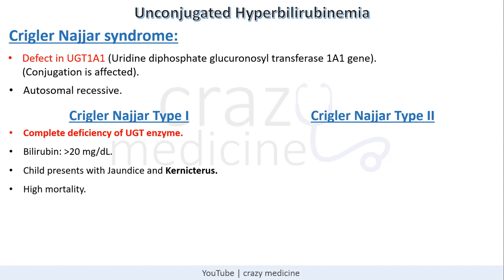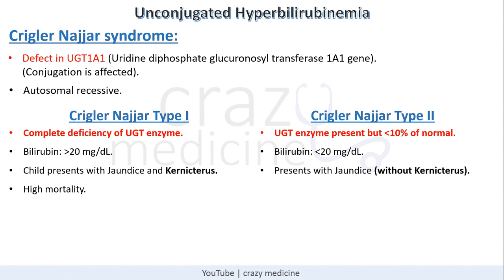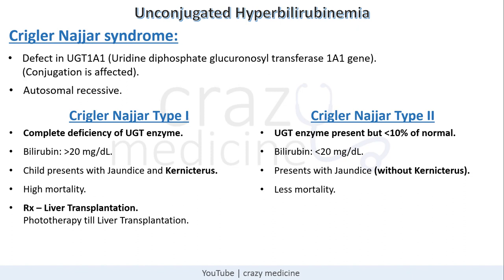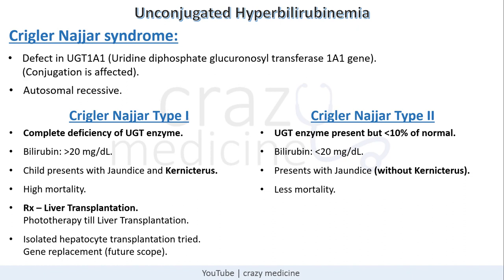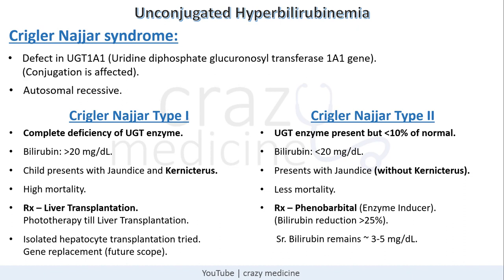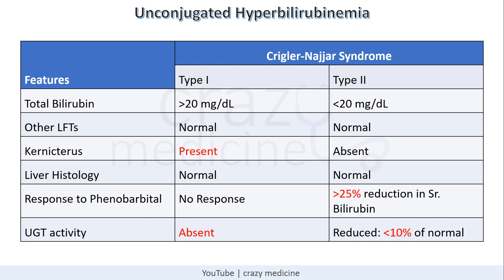As Type 1 is associated with kernicterus, it has very high mortality. In Type 2, UGT1A1 enzyme is present but typically less than 10% of normal, so serum bilirubin does not exceed 20 mg/dL and the child presents with jaundice but without kernicterus — so mortality is less. Treatment for Type 1 includes liver transplantation; phototherapy can be tried until transplantation, and isolated hepatocyte transplantation and gene replacement therapy are other modalities. In Type 2, enzyme inducer phenobarbital can be used — it induces UGT1A1, causing more than 25% bilirubin reduction, though bilirubin remains around 3–5 mg/dL and does not normalize.